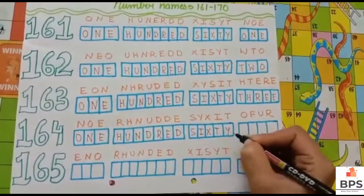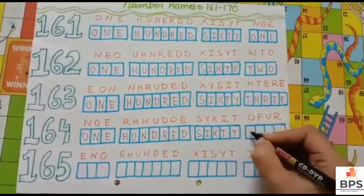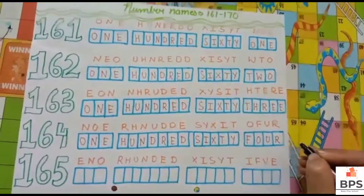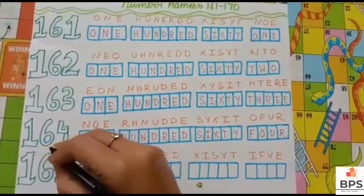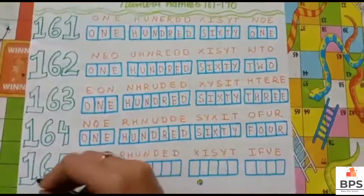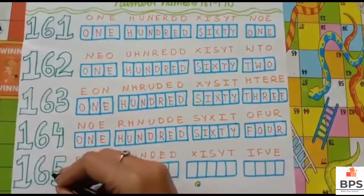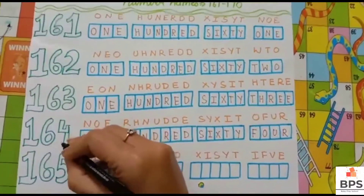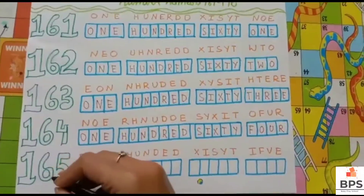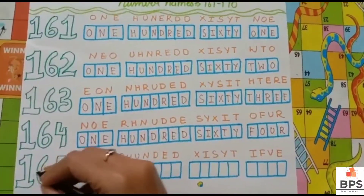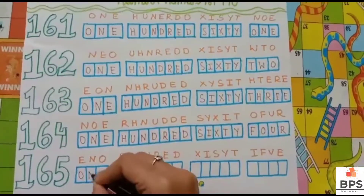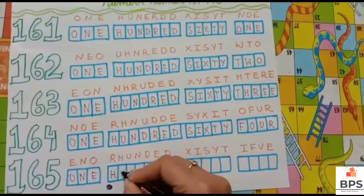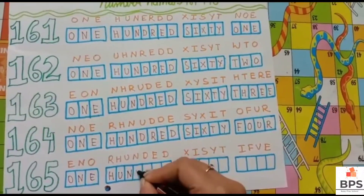One hundred sixty four. 164. O-N-E, one. H-U-N-D-R-E-D, hundred. S-I-X-T-Y, sixty. F-O-U-R, four. One hundred sixty four.